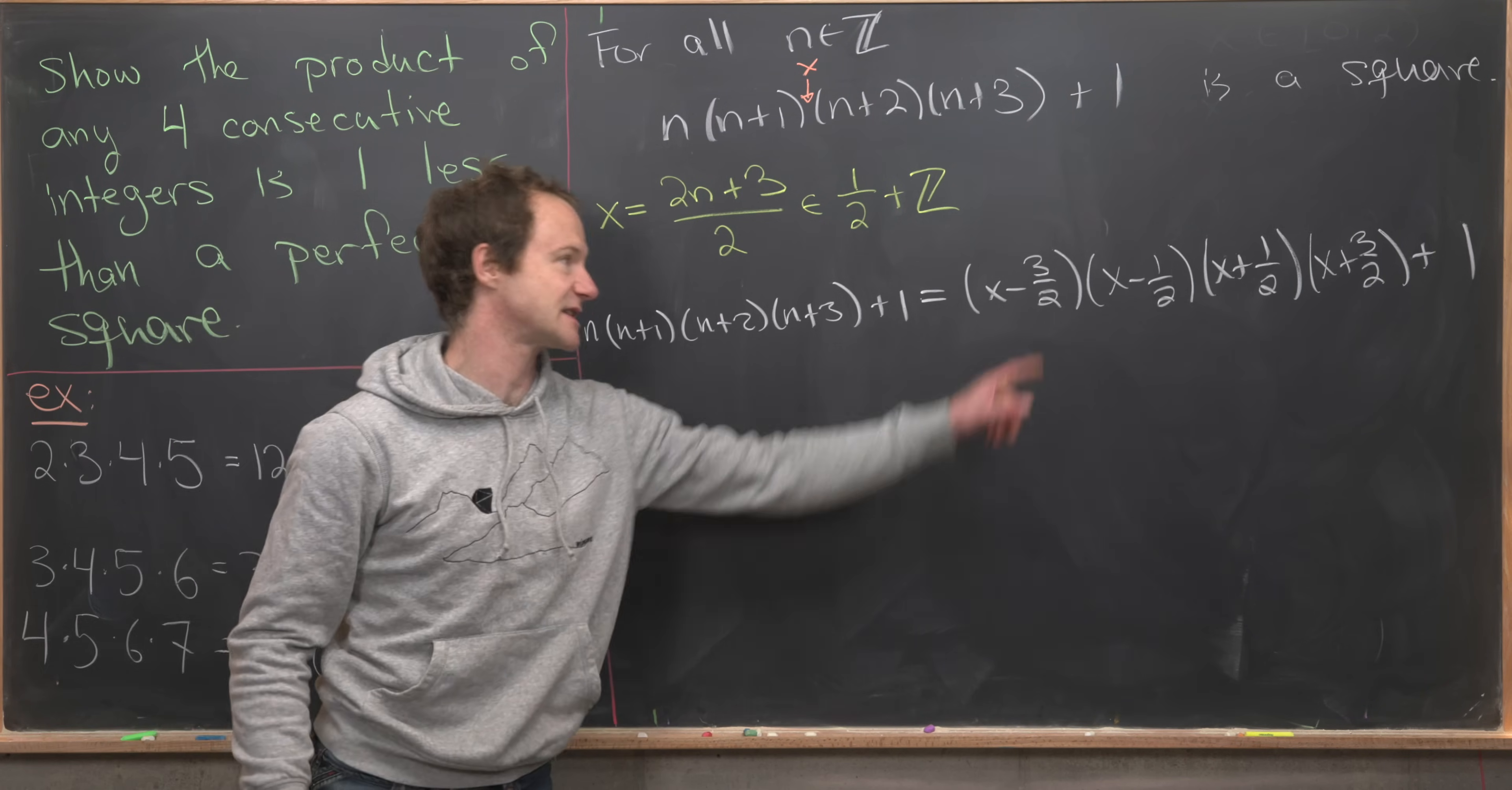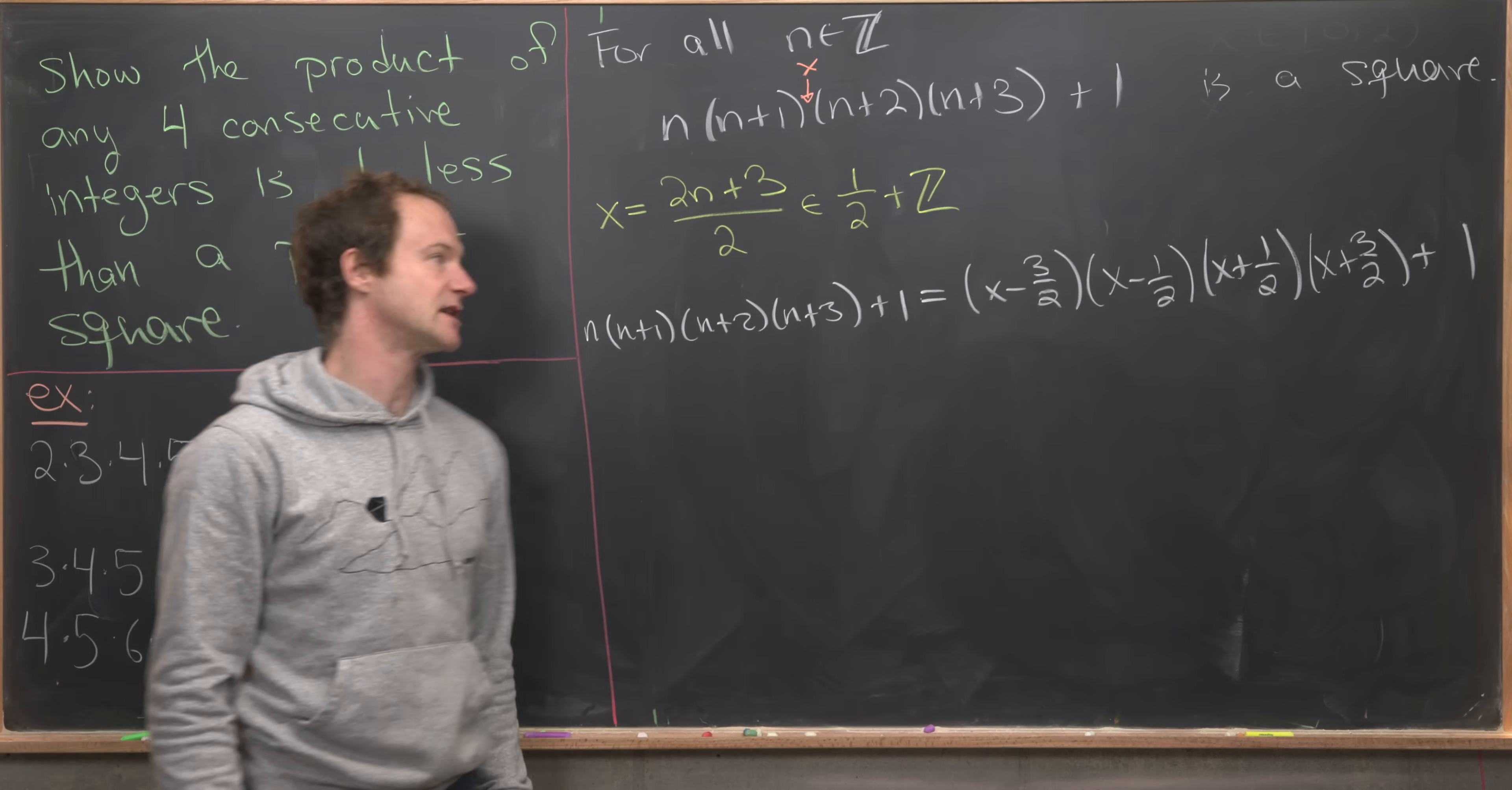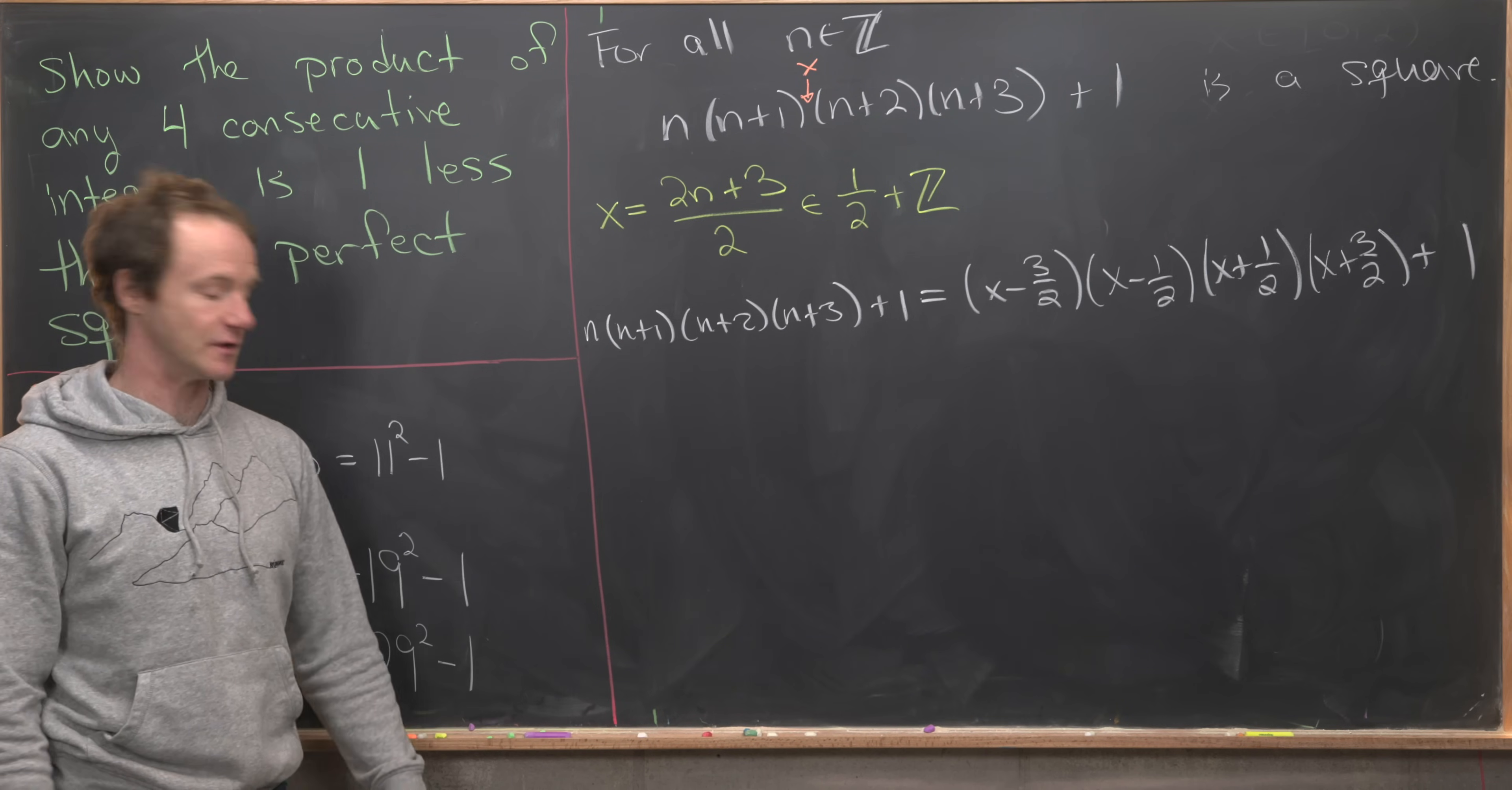So there my n is this x minus 3/2. Like I said before, my n+1 is my x minus 1/2, and then so on and so forth.